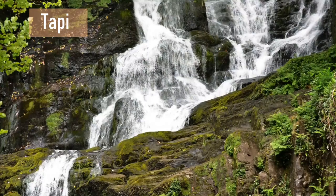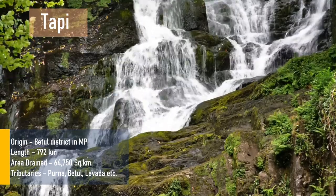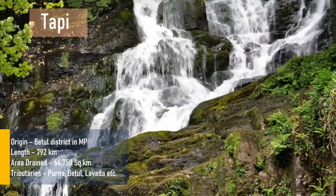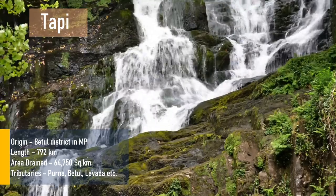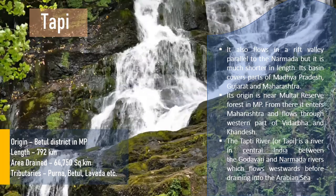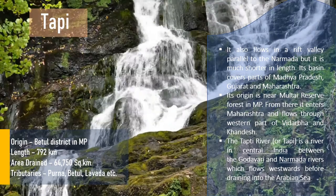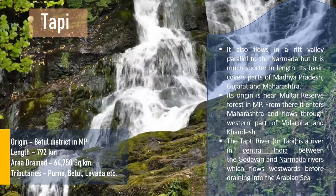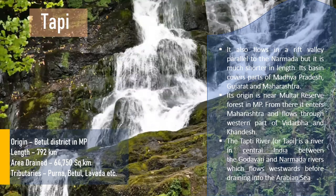The Tapi river originates from Betul district in Madhya Pradesh; its total length is 792 km; area drained is 64,750 sq km. Its tributaries are Purna, Betul, and Girna. An important point: the Tapi river is also known as Tapti and flows between the Narmada and Godavari rivers, flowing westward before draining into the Arabian Sea.